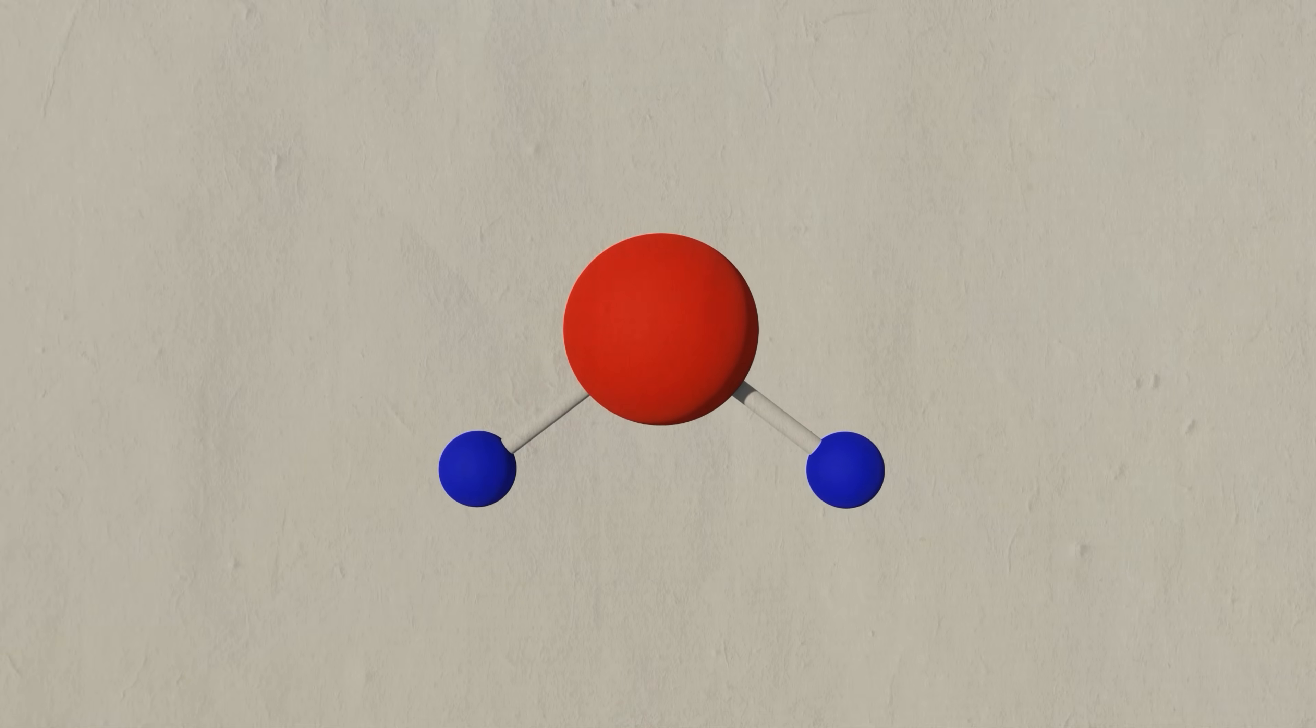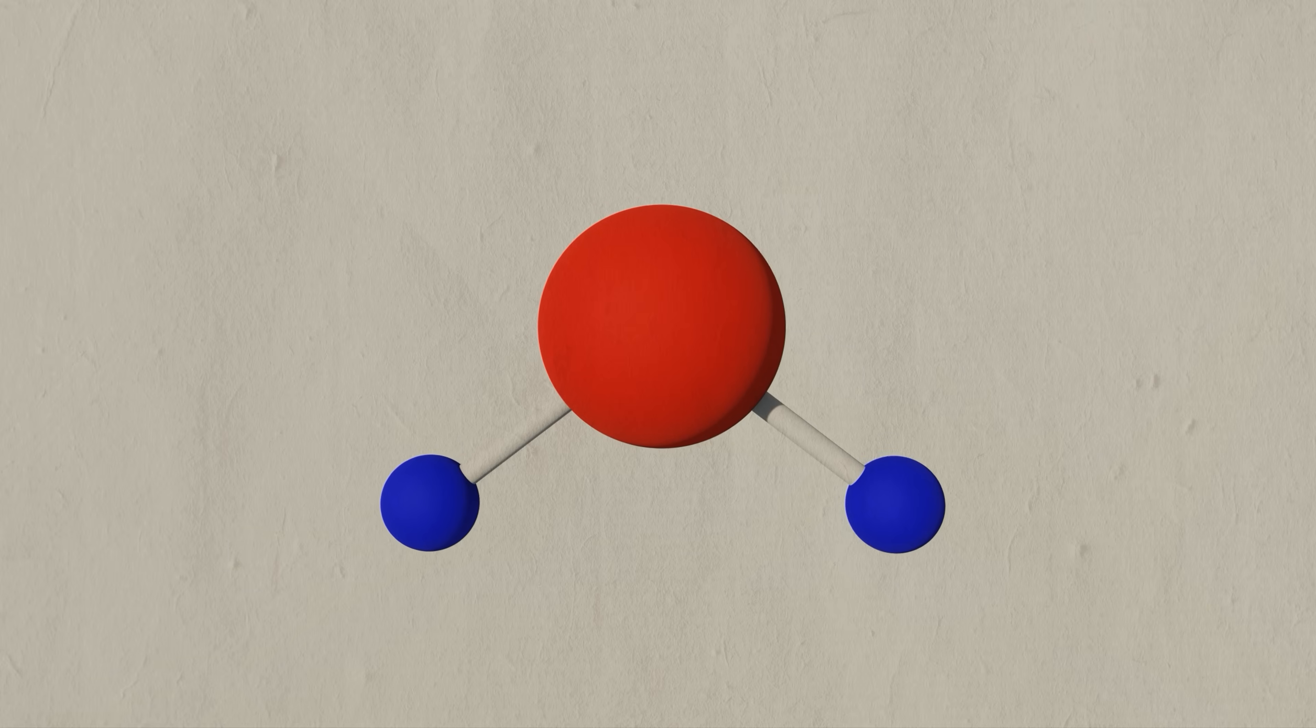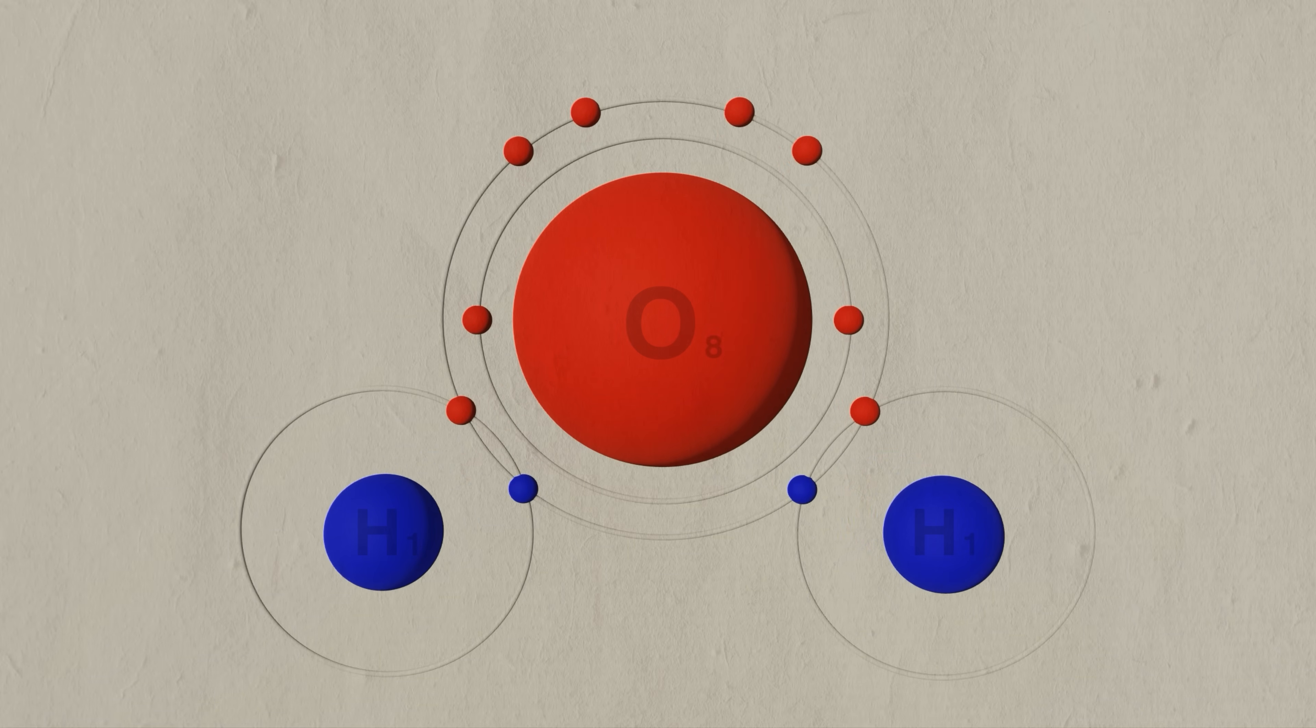You have probably seen H2O drawn similar to this, but to understand its properties, we must look closer at how the electrons are shared between the atoms. The distinctive V-shape can be explained by the principles of bent molecular geometry. This theory states that the physical structure of molecules directly influence their properties and behaviors. Electron pairs surrounding an atom repel each other, and will therefore arrange themselves to be as far apart as possible.